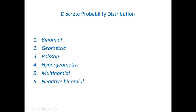In a probability distribution, you have all the possible outcomes. You can know the possible outcomes, therefore you can calculate all the probabilities. It's when you list all the possible outcomes and their probabilities - that is the probability distribution, for example.